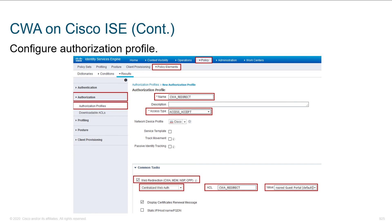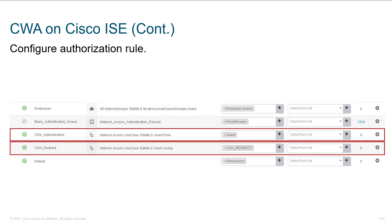The next thing we jump to is the CWA redirect. The idea is we allow access to the network, and then under common tasks we check the box for web redirect. There are different types — local versus central — and we'll use CWA or central. Here's that CWA redirect access list we referenced earlier, and we have a value for the sponsored guest portal. Looking at the authorization rule itself, CWA authentication is tied to network access use case equals guest flow, and with redirect we do network access use case equals host lookup.